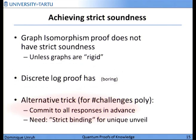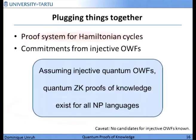We add a commitment in the first message to every response that we might give — this only works if we have a polynomial number of challenges. Then we will not have the choice to open to a different message. This addition needs a property called strict binding on the commitment, which makes sure we also don't have different possible unveil informations. If we plug things together — for example, take a proof system for Hamiltonian cycles and take commitments that we can build from injective one-way functions — then we have the theorem that, assuming injective quantum one-way functions, quantum zero-knowledge proofs of knowledge exist for all languages in NP.